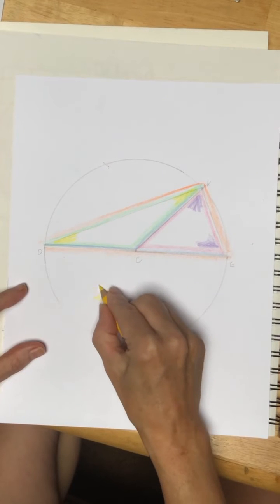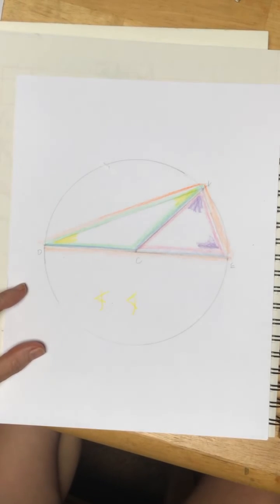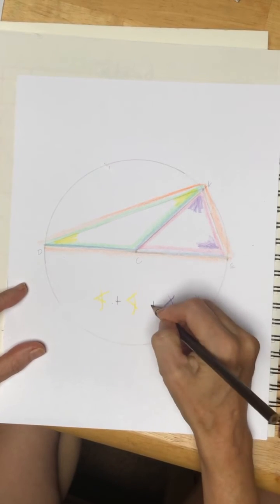Now let's look at the larger triangle. Because we know that the internal angles add to 180, then we know two yellow and two purple give us 180.